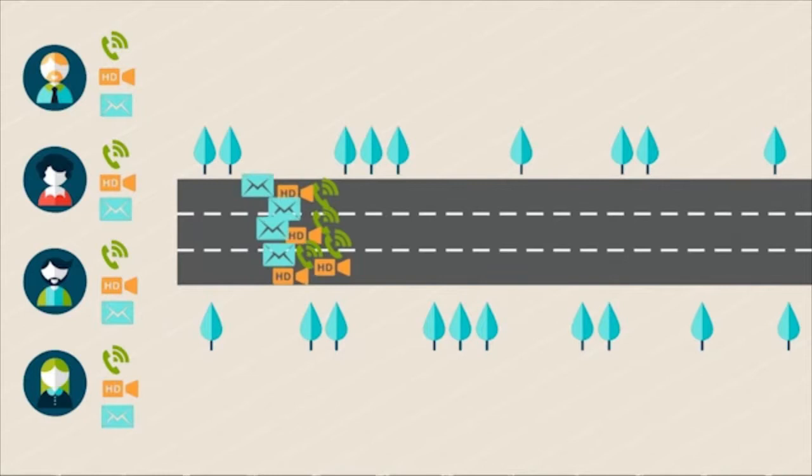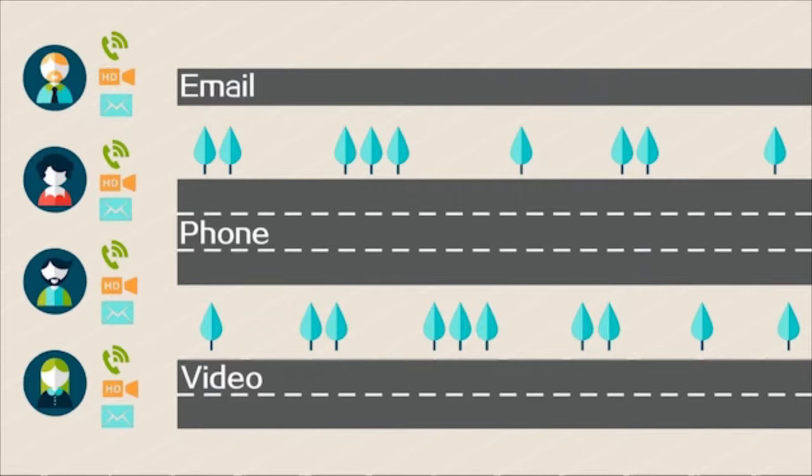Next, the switch encounters the bandwidth allocation problem. S5720HI uses the innovative Hierarchical QoS feature to resolve this problem. Traditional QoS technology identifies packet priorities based on service types, while Hierarchical QoS schedules packets on a per-user, per-service basis.